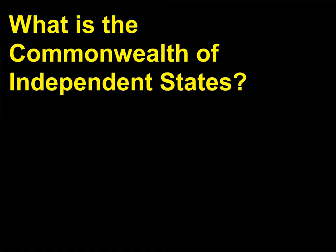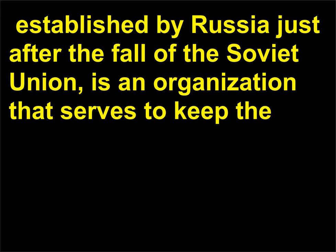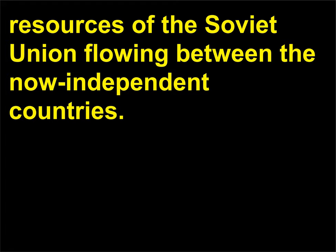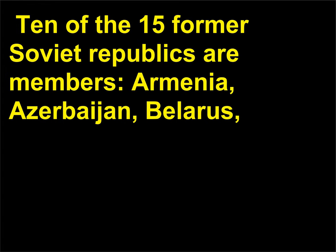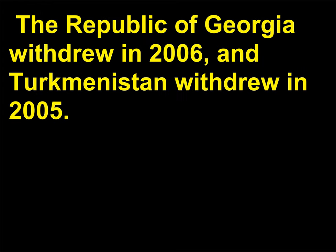What is the Commonwealth of Independent States? The Commonwealth of Independent States (CIS), established by Russia just after the fall of the Soviet Union, is an organization that serves to keep the resources of the Soviet Union flowing between the now independent countries. Ten of the 15 former Soviet republics are members: Armenia, Azerbaijan, Belarus, Kazakhstan, Kyrgyzstan, Moldova, Russia, Tajikistan, Ukraine, and Uzbekistan. The Republic of Georgia withdrew in 2006, and Turkmenistan withdrew in 2005.